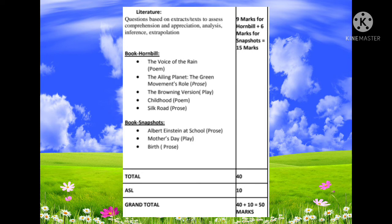Section C is literature. Again, there will be questions from the two textbooks — Hornbill and Snapshots. The portions for term 2 from Hornbill are: The Voice of the Rain, The Ailing Planet: The Green Movement's Role, The Browning Version, Childhood, and Silk Road. From Snapshots: Albert Einstein at School, Mother's Day, and Birth. Hornbill carries 9 marks and Snapshots carries 6 marks, making the total for section C literature 15 marks. The total marks for sections A, B, and C is 40. In term 2, you also have ASL for 10 marks, so the grand total for term 2 is 50 marks.